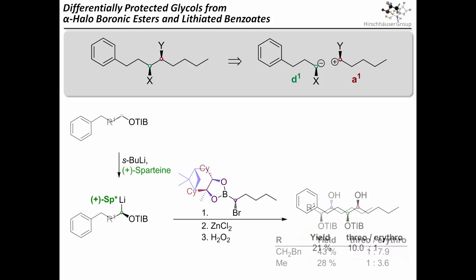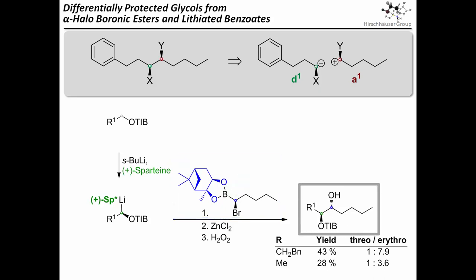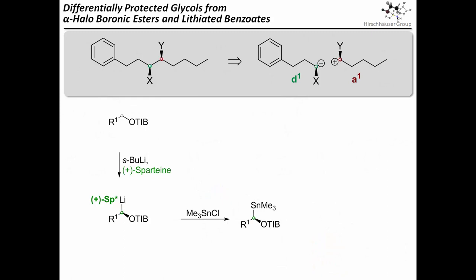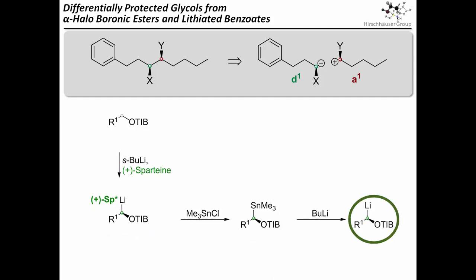We tried to make the other diastereomer by using a pinanediol boronic ester, in which the alpha stereocenter is inverted. This gave us the other diastereomer, and while the yield looks a bit better here, it should be stressed that the reaction remained quite capricious. To simplify the coupling protocol and remove the sparteine ligand from the coupling reaction, we stored the carbanion as a stannane. This is a quite well-known method and allows you to release the carbanion again just by tin-lithium exchange.